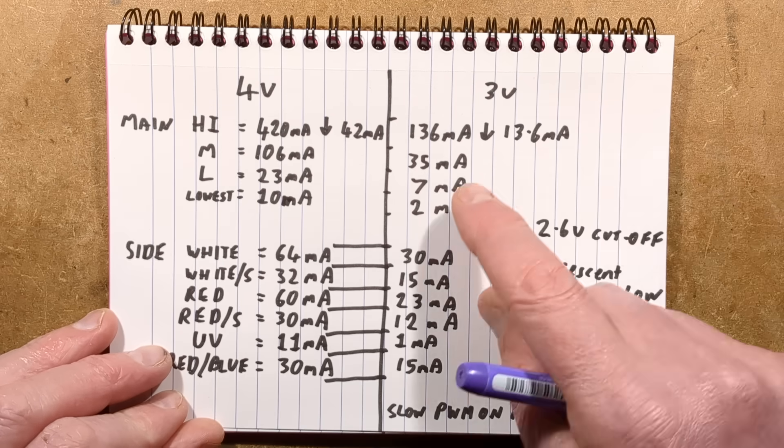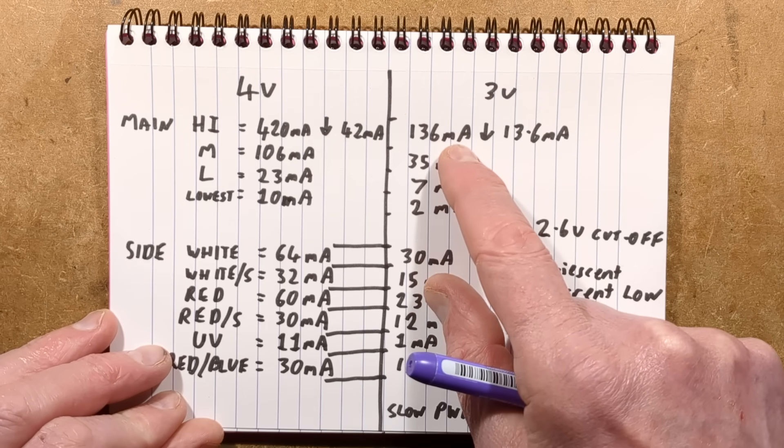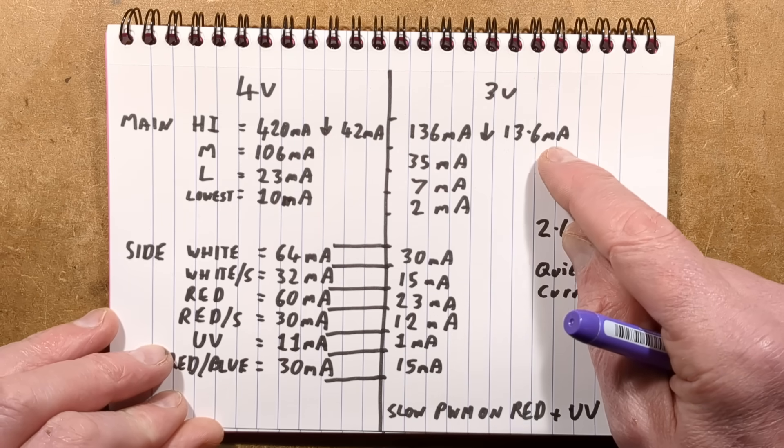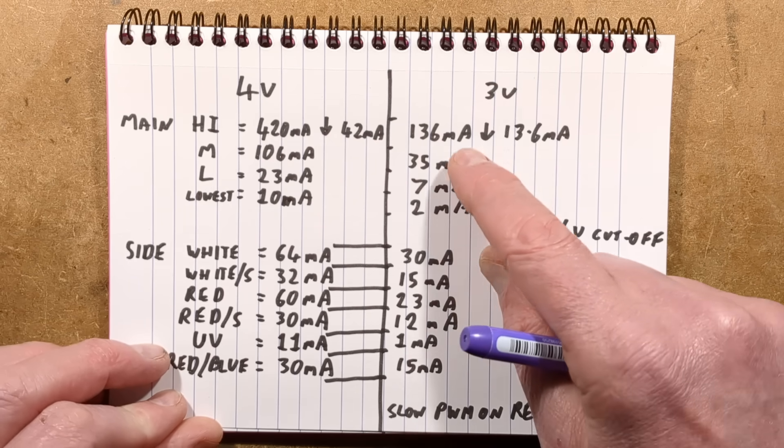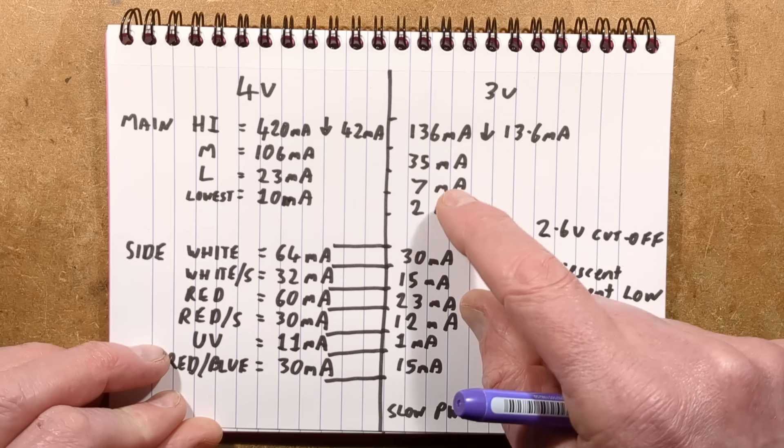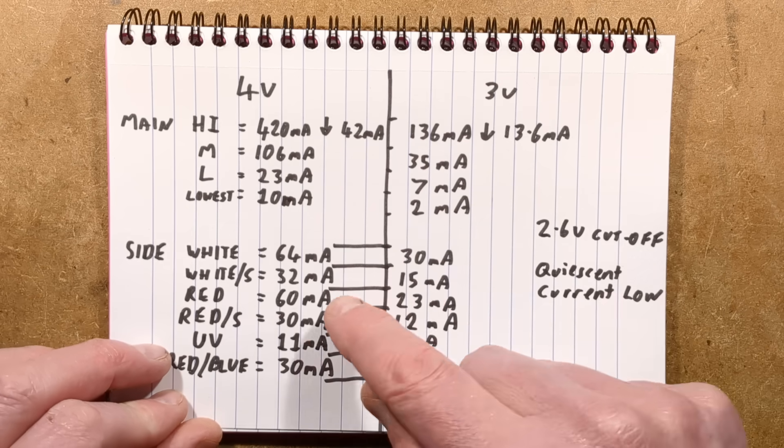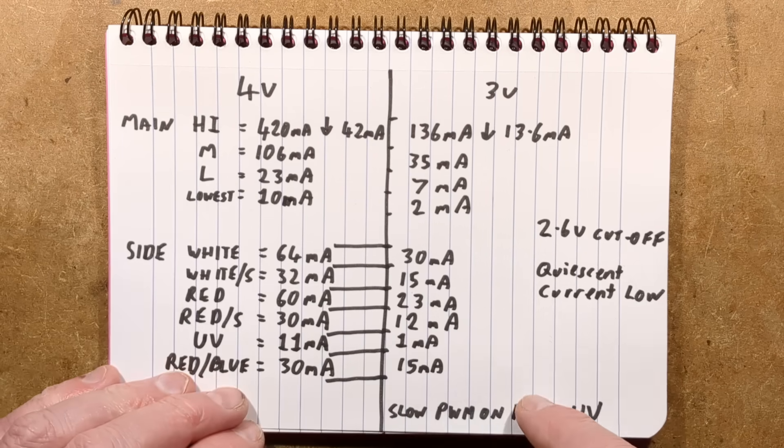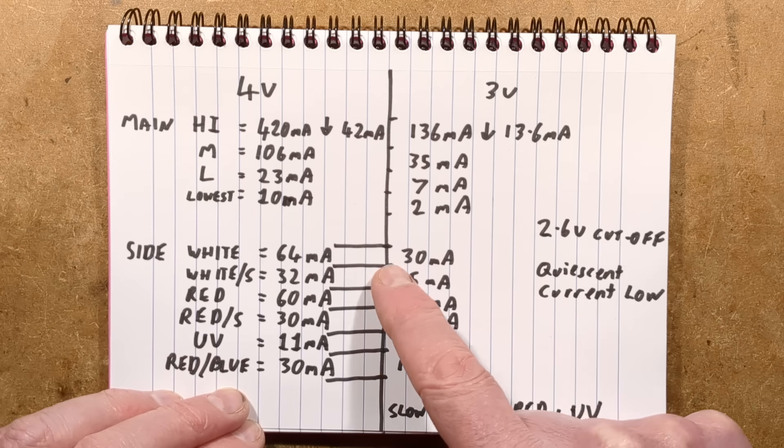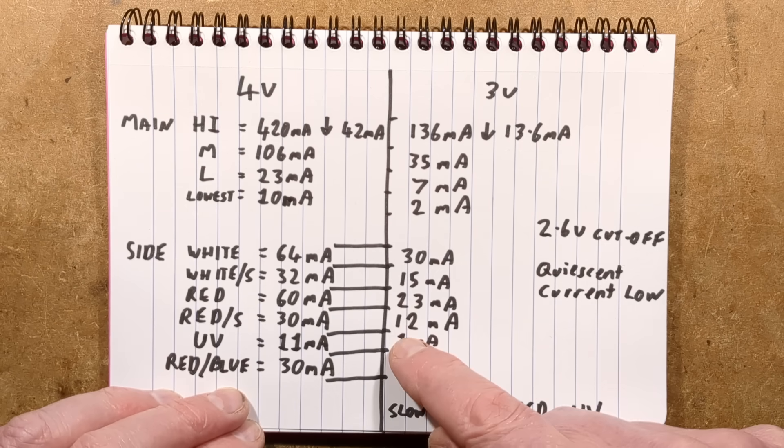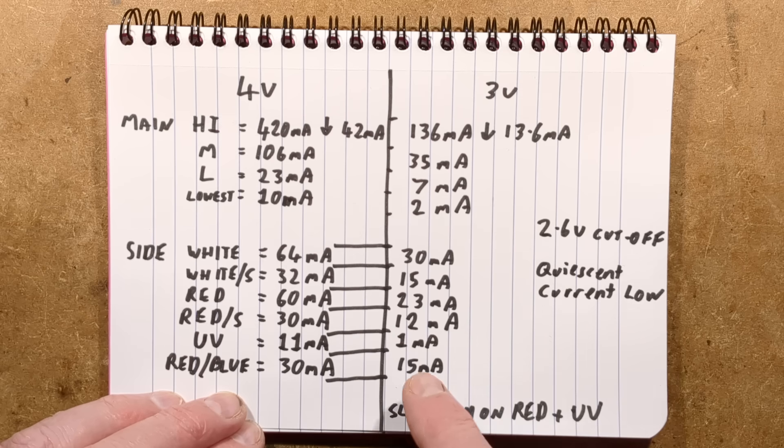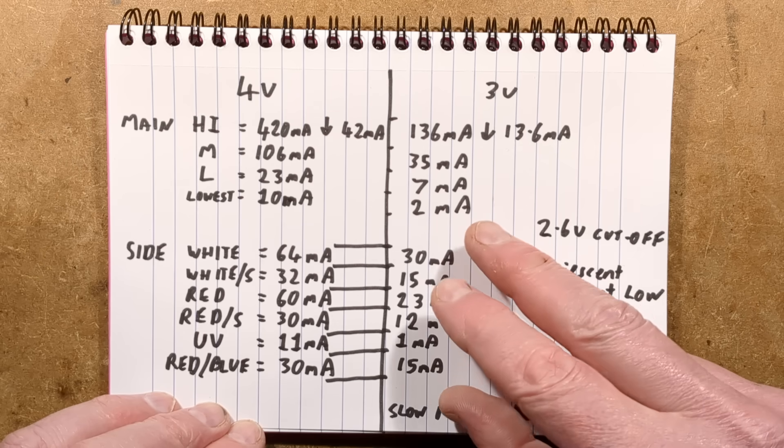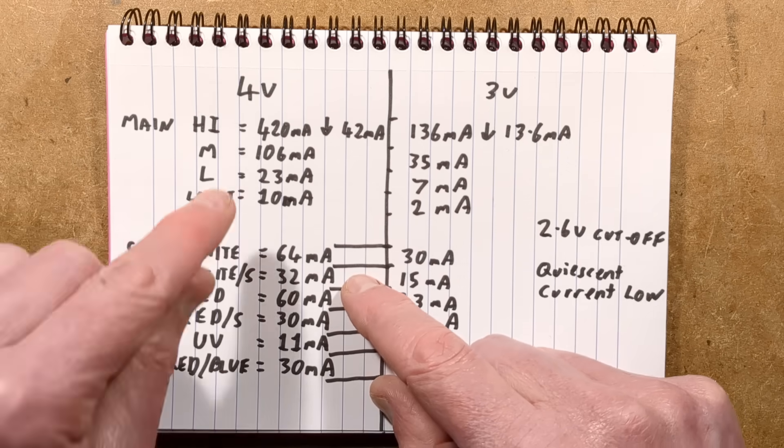At 3 volts, the main LED dropped down to 136 milliamps, dropping down in steps. It still does so at that voltage. And the other LEDs were about 35 milliamps, 7 and 2 milliamp. As the voltage drops, you're going to get quite a long run time in this lowest level. Quite good. The white was pretty much half what it was before-ish, except the UV which went down to 1 milliamp. But the other ones, more or less roughly half-ish what they were at 4 volts.